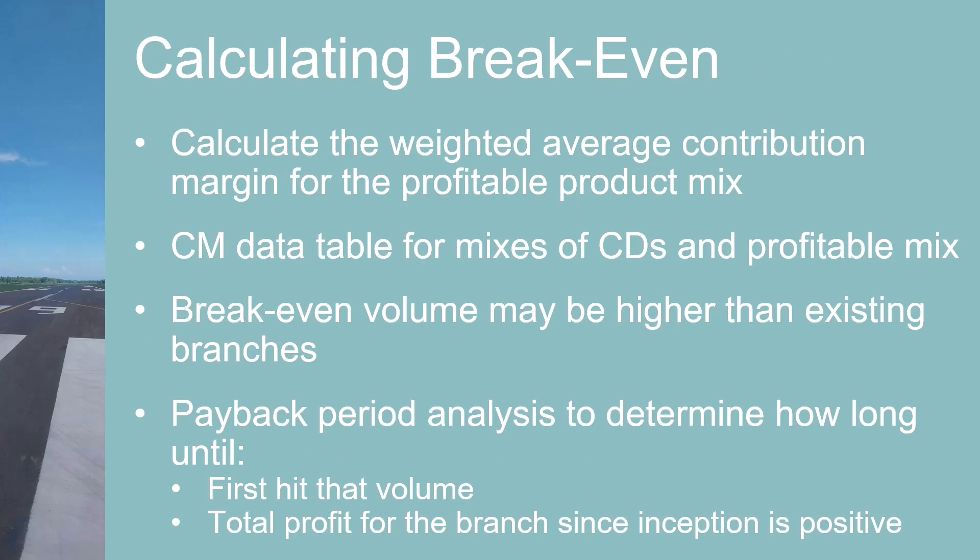We can calculate combinations of the weighted average contribution margins of the profitable product mix and the high-yield CDs in a data table, showing when total contribution margin starts to exceed the high fixed costs of a new branch. If the high-yield CDs have a negative margin, the break-even volume needed from the profitable product mix is higher than that of an existing branch. It takes time to cross-sell new products as people slowly transfer their checking and savings balances. A time series analysis, like payback period analysis, shows how long until the branch first hits break-even volume and until total profit since inception is positive. And in case you're wondering — the answer is a long time. A very long time.